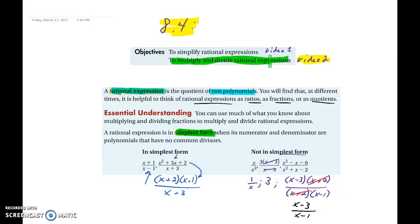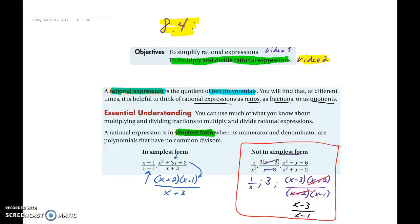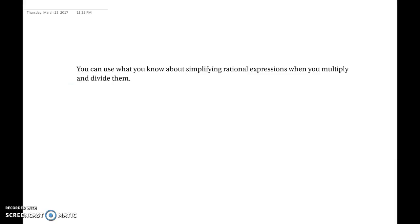When we're multiplying and dividing rational expressions, to make this as easy as possible, you want to simplify each rational expression first. Being able to simplify is key to multiplying or dividing. If you can't simplify, there's really nothing you can do about it, but you're hoping that there's something you can simplify between the two rational expressions. You can use what we know about simplifying rational expressions when we multiply and divide them.